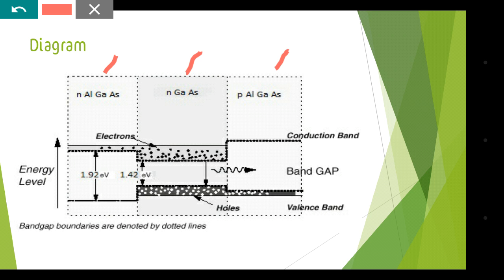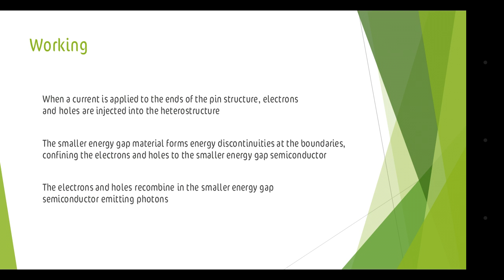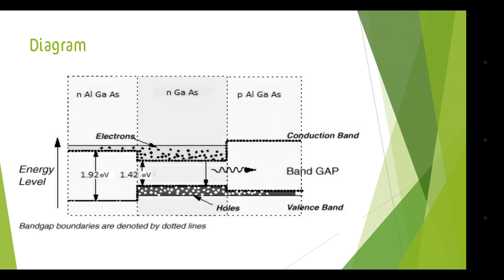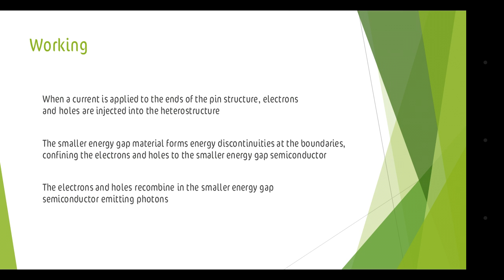This structure has three layers and we can see the bandgap, conduction band, and valence band. The working of this double heterostructure LED is that when we supply a current through a PIN structure, electrons and holes are injected into the heterostructure — electrons are injected from one side and holes from the other side. These electrons and holes recombine in the middle part, that is the gallium arsenide layer with smaller bandgap energy, and with the combination of holes and electrons there is photon emission and light is emitted.